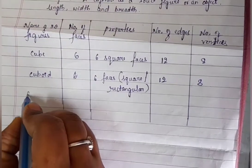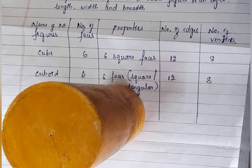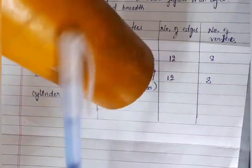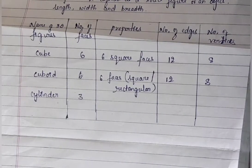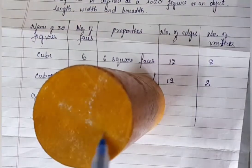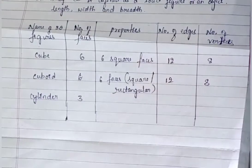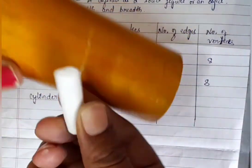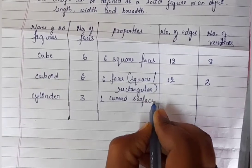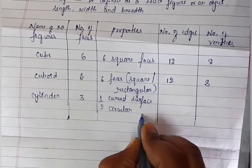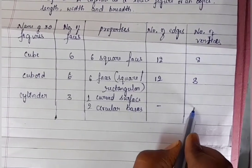The next figure is a cylinder. Count the number of faces in a cylinder: one, two, three. The number of faces in a cylinder is three. Its properties are one curved surface and two circular bases. For a cylinder, we cannot count edges or vertices.